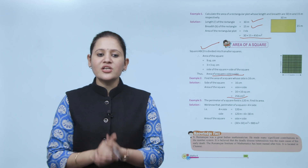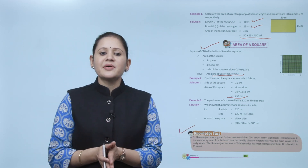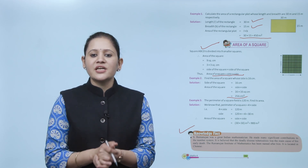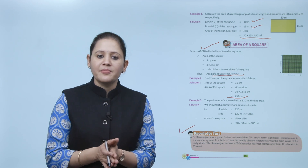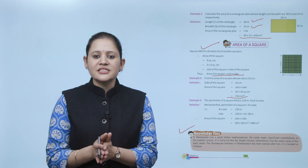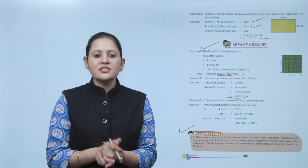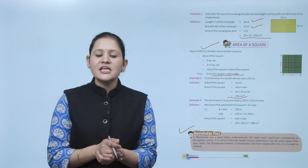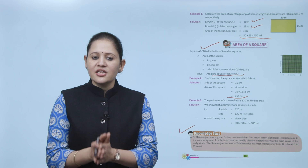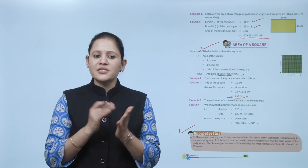Knowledge fact: Ramanujan was a great Indian mathematician who made many significant contributions in the number system. It is believed that tuberculosis was the main cause of his early death. The Ramanujan Institute of Mathematics, named after him, is located in Chennai.